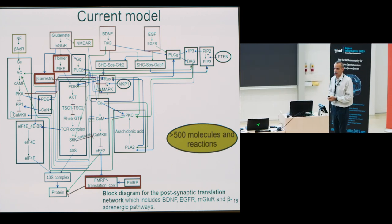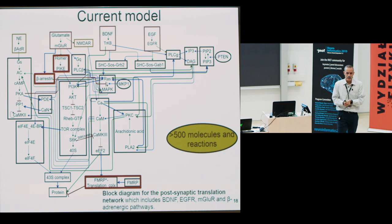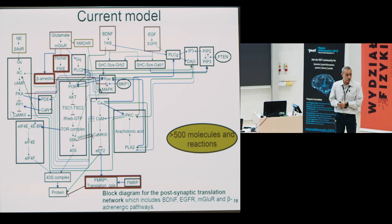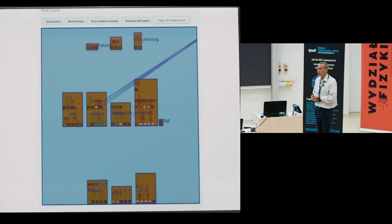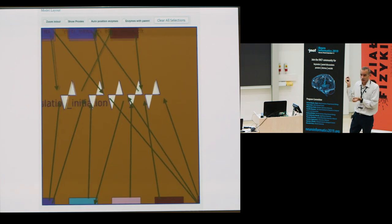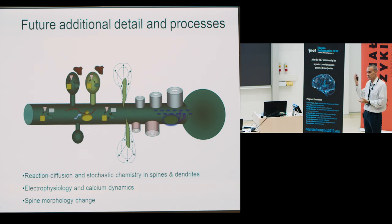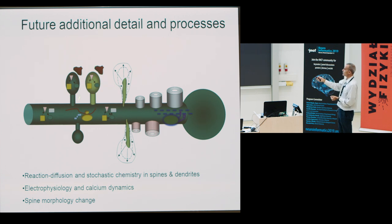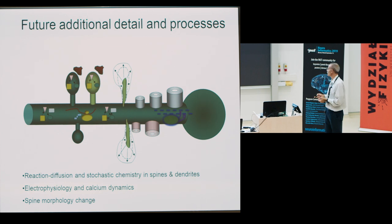This is a substantially larger model than anything we have tried before. The goal of the next step is: how do you make sure this model has its feet on the ground — that it has some basis in reality? Each of those pathway blocks is a fairly complicated set of reactions, and we need to parameterize — to specify numbers for every single one of those reactions and concentrations. That's our challenge. At some point we'd also like to include reaction diffusion, stochastic processes in spines and dendrites, electrophysiology, calcium dynamics, and morphology change — but for now, we have enough on our hands.